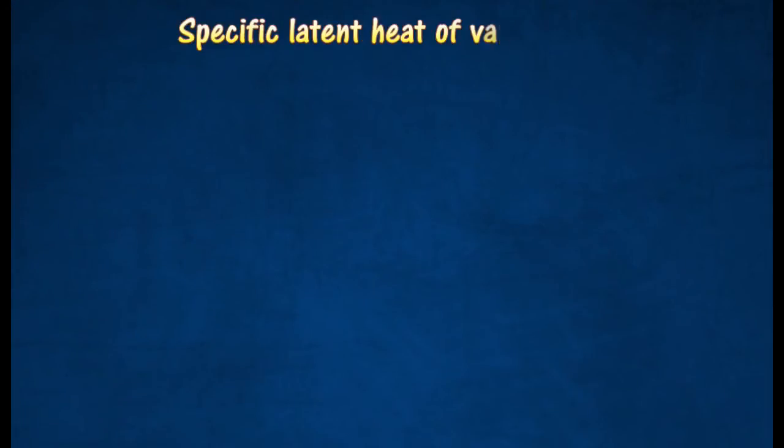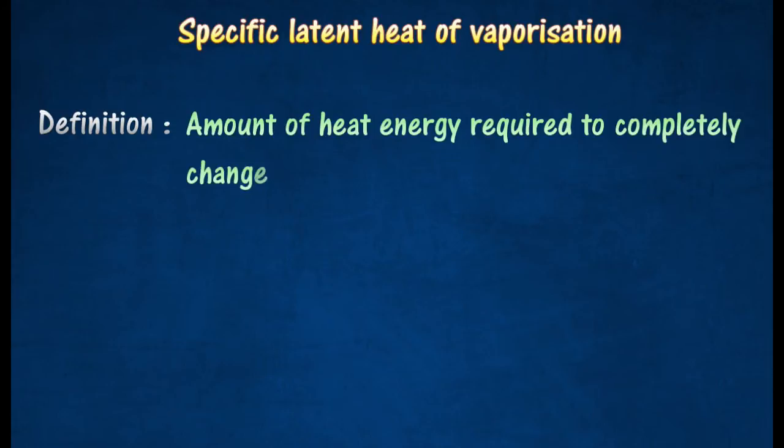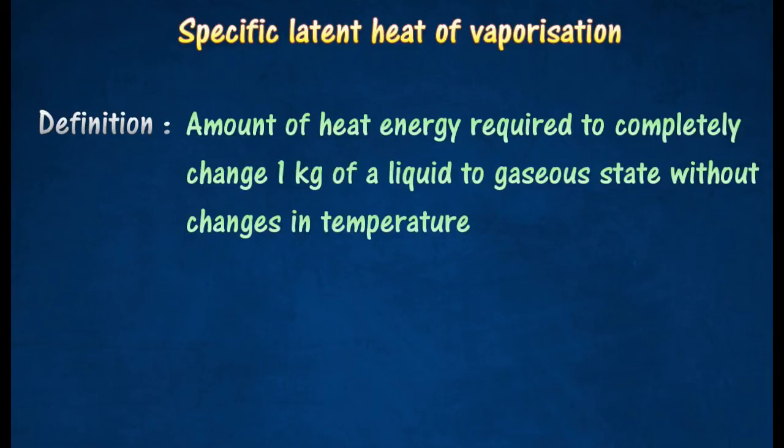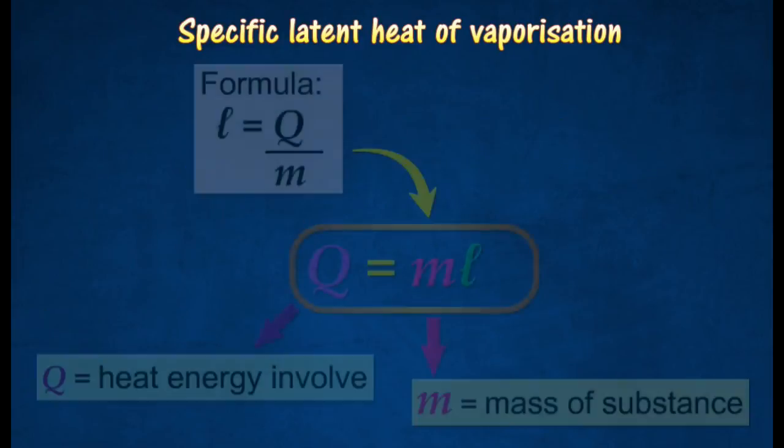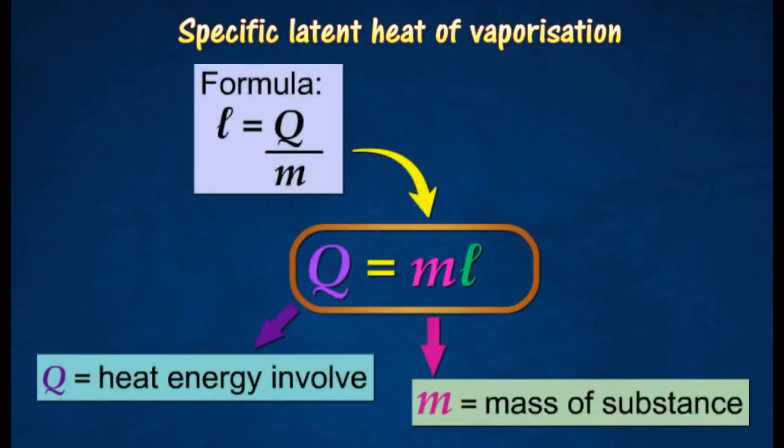The specific latent heat of vaporization of a substance is the quantity of heat needed to change 1 kg of the substance from the liquid to the vapor state without any temperature change. Specific latent heat of vaporization uses the same units as specific latent heat of fusion, which is joules per kilogram or joules per gram, and is also represented by the symbol L.